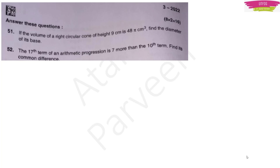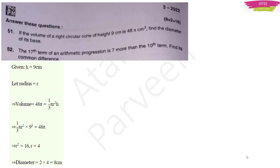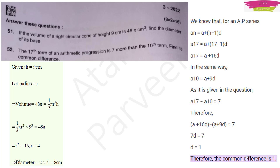Now the descriptive questions — two-mark questions. First: if the volume of a right circular cone of height 9 cm is 48π cm³, find the diameter of its base. Volume = (1/3)πr²h; substituting gives r = 4 cm, so the diameter is 8 cm. Second: the 17th term of an AP is 7 more than the 10th term — find the common difference. Setting a₁₇ − a₁₀ = 7 and solving gives common difference d = 1.